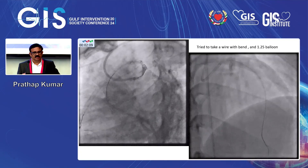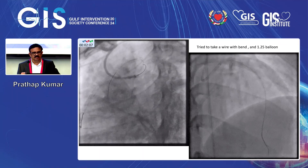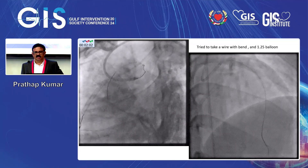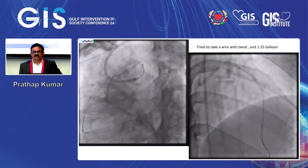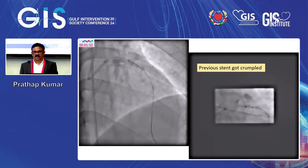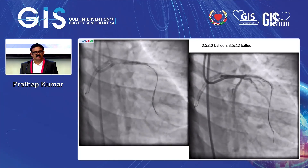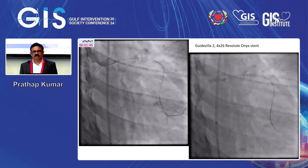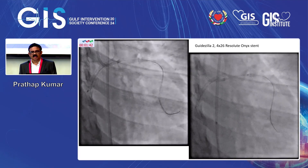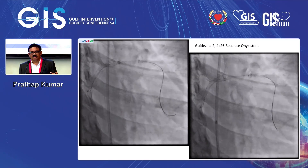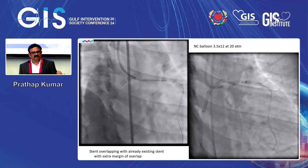I took another wire, bent it — because a bent wire goes inside the vessel, probably in the right lumen. So taking a wire, bending it, going inside, balloon dilated. When I inflated the 1.25mm balloon, I understood that the previous stent had crumbled. Once it crumbled — you can see the crumbling — I took a 2.5x12mm balloon, then a 3.5x12mm balloon. Guide cell taken to deploy another stent: 4x26mm overlapping stent — a new stent coming through the guide cell from the previous stent.